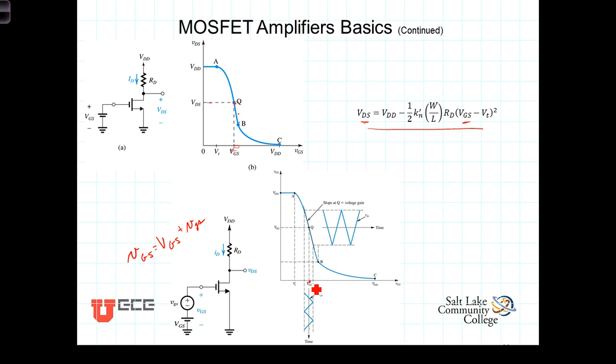And just as the input was centered around capital VGS, the DC or bias gate voltage, the output value or the output variations are centered around the bias value VDS.